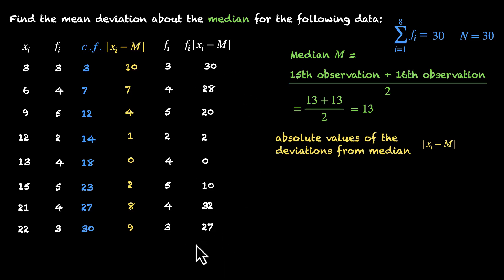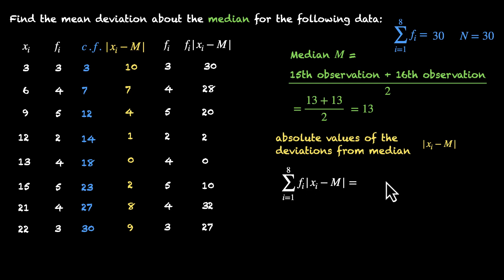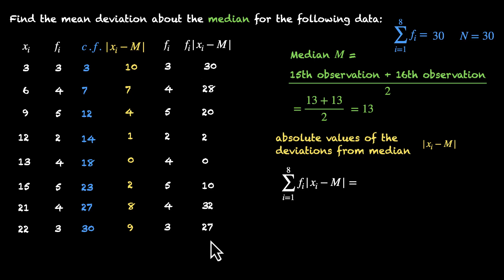Now we add all of those up to find Σfi|xi − m|. Adding the tens place: 3+2+2+1+3+2 = 13, giving 130. Adding the units place: 2+7+9+2+8 = 19. Wait, let's add: 30+28+20+2+0+10+32+27 = 149. So Σfi|xi − m| = 149.